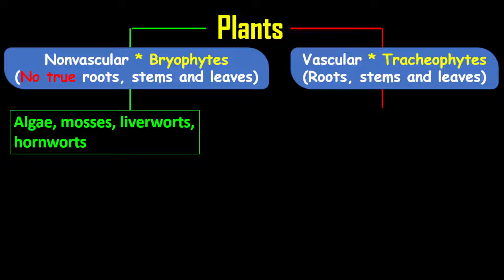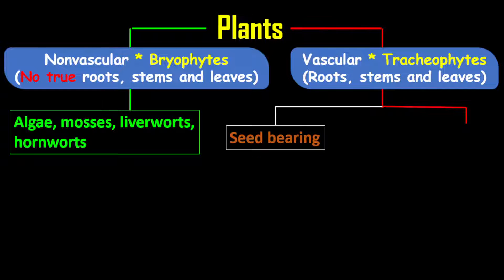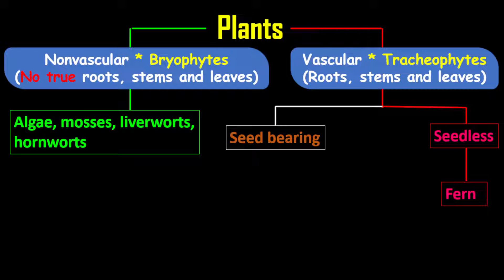Vascular plants can be further broken down into two other categories: seed-bearing plants and seedless plants. When we talk about seedless plants, we're talking about plants that bear spores instead. A typical example of that is fern.